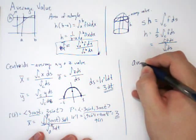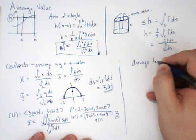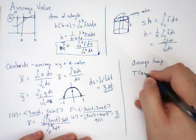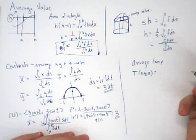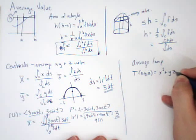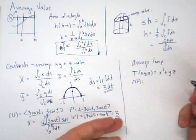That shows us how we get centroids. The last thing I want to look at is just average anything. Average temp, for example. If you suppose that some function, a function for temperature in the plane of some object is X squared plus YZ.